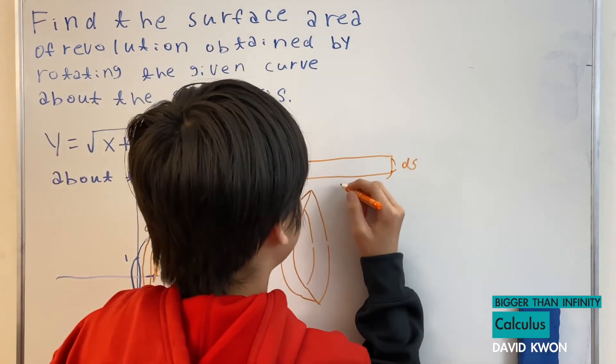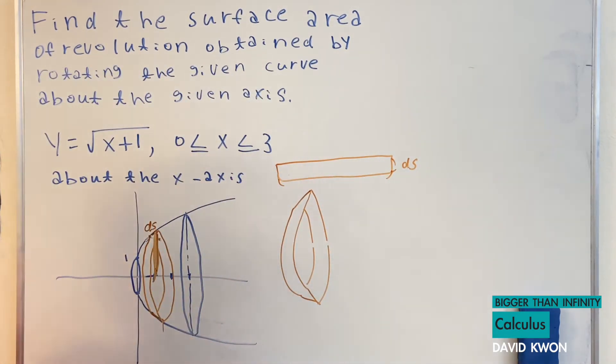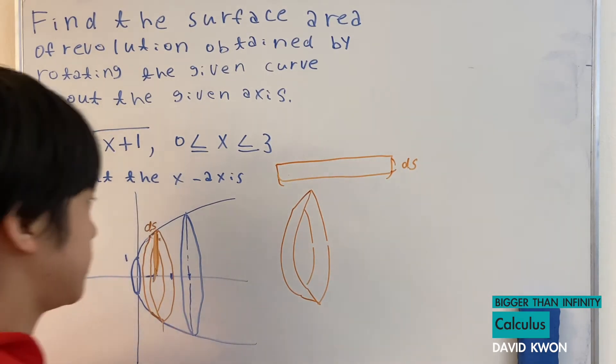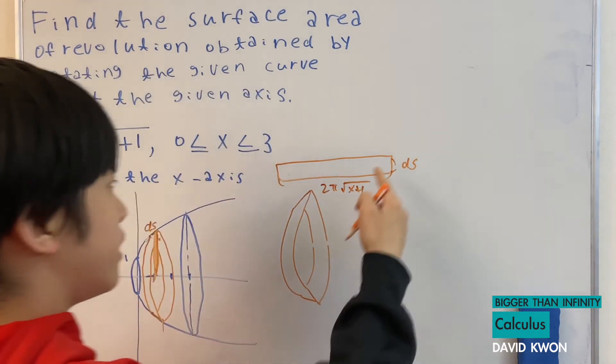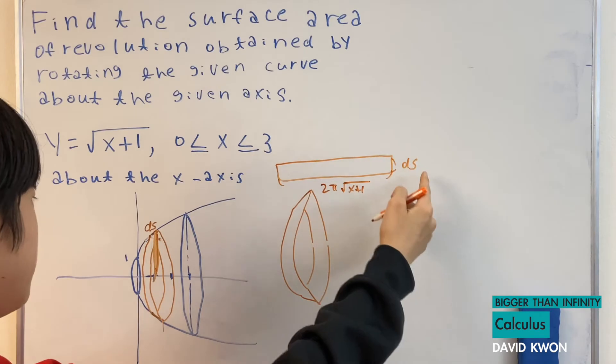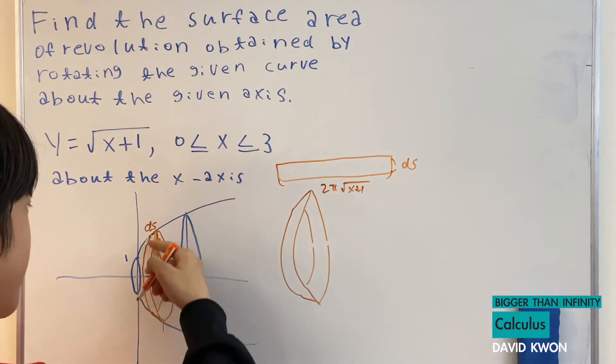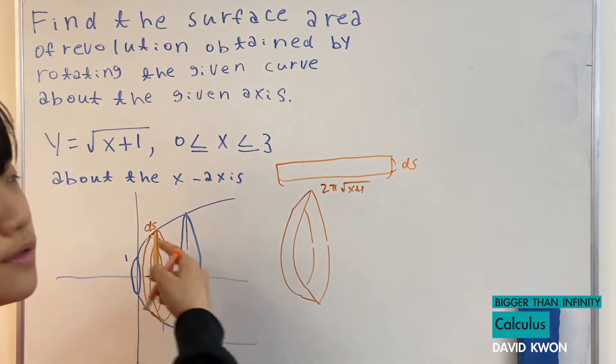So the original formula to find the circumference is 2 pi r, but r is y, and y is square root of x plus 1. So 2 pi square root of x plus 1. And when I multiply them together, we just have found the surface area of this rubber band. How's that useful?